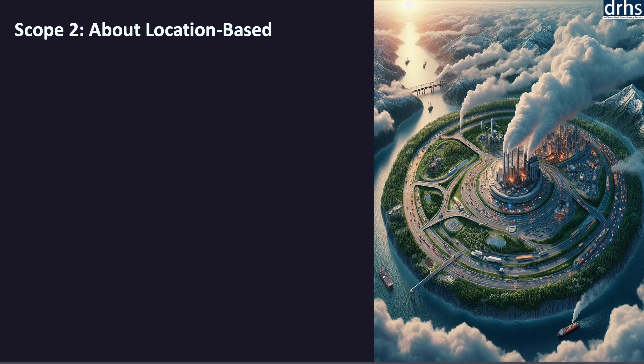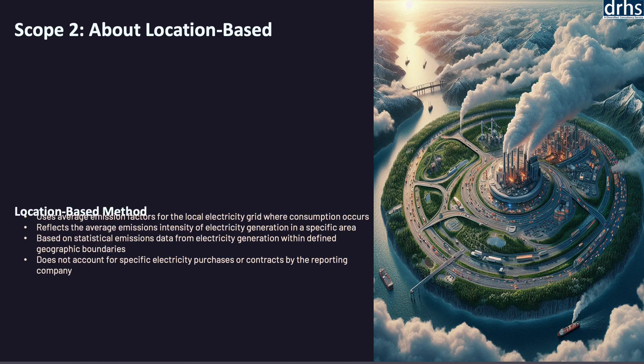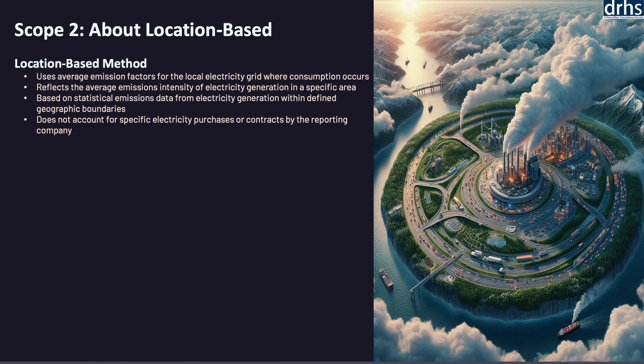Now let us explore the location-based methodology for scope 2 emissions. The location-based method is one of the two approaches recommended by the Greenhouse Gas Protocol for calculating and reporting scope 2 emissions. Scope 2 emissions are indirect greenhouse gas emissions from the consumption of purchased electricity, heat, steam, or cooling. These emissions occur at the power plant where electricity is generated rather than at the point of consumption, but are still attributable to the end user.